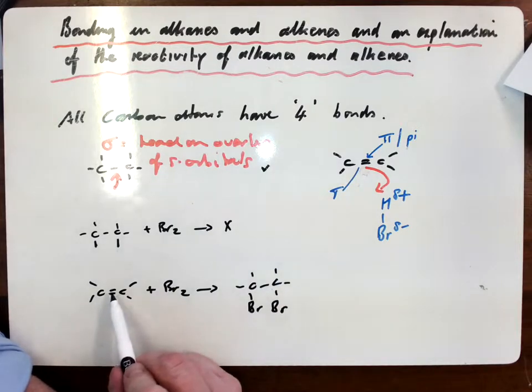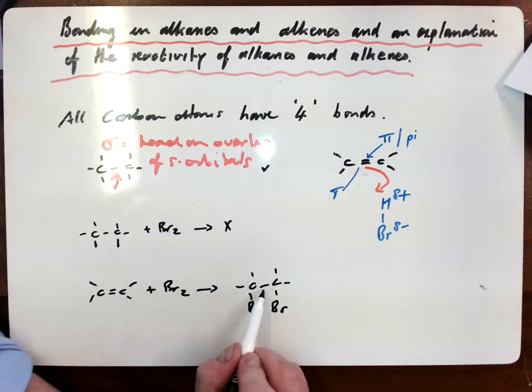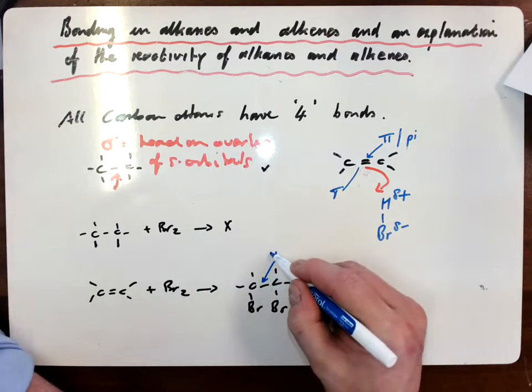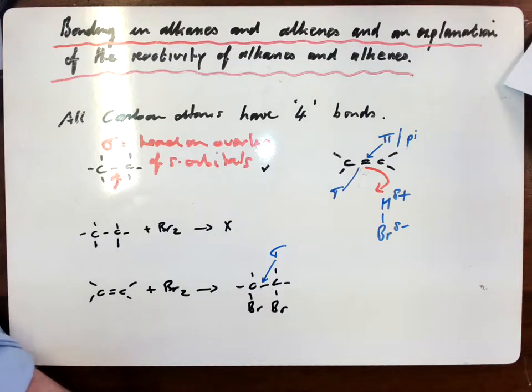Now what you will notice is that one of the bonds in the double bond is broken and the other one is left intact. And hopefully you are able to work out that the one that is left intact is the sigma bond. And the one that is broken is the pi bond.